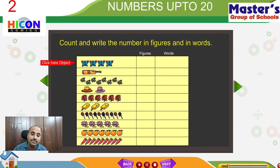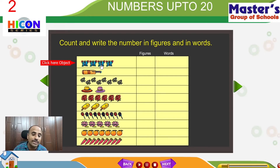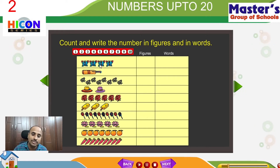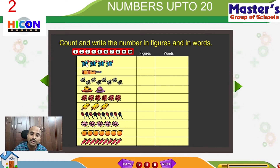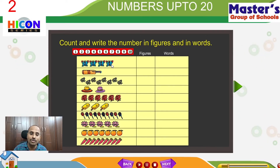Observe the first set of pictures. The first set contains butterflies. How many butterflies are there? So let us count: 1, 2, 3, 4. So children, how many butterflies are there? Yes, 4 butterflies are there. So the figure for the butterflies is 4.